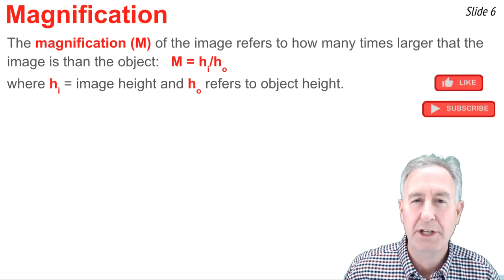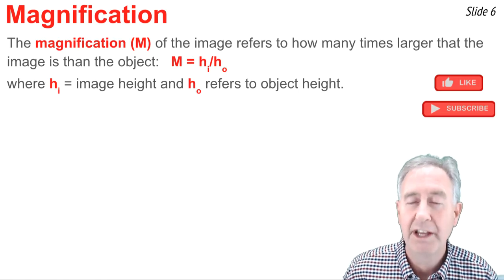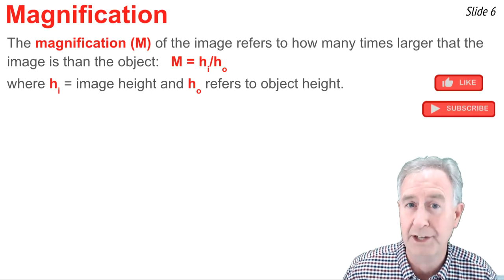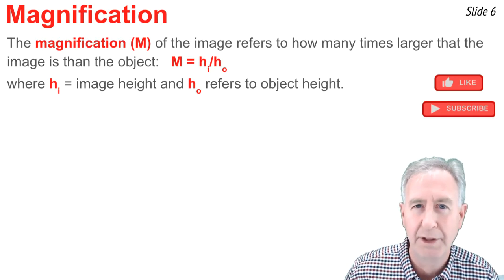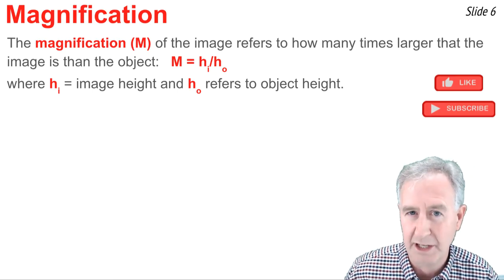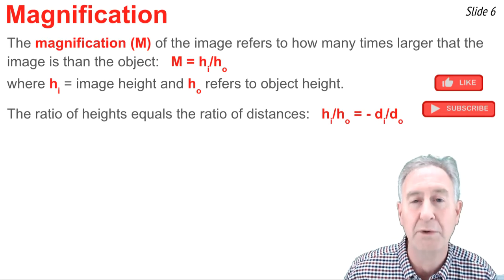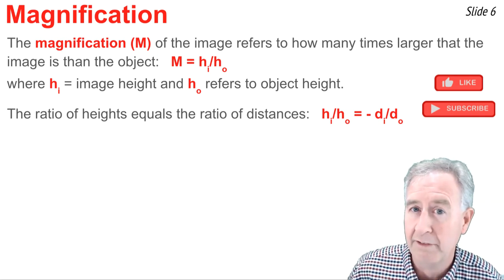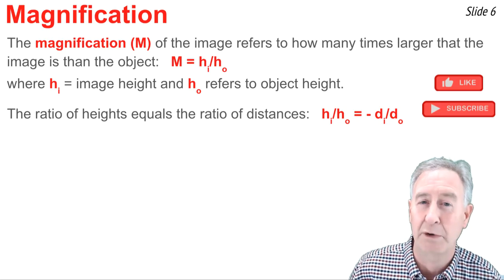The magnification of an image tells us how many times larger the image is than the object itself. If the image ends up being two times larger than the object, then the magnification is either plus or minus two. m, magnification, equal h_i divided by h_o. The h_i here is the image height, and the h_o is the object height. Now, it ends up that the ratio of these heights, h_i over h_o, is equal to the negative of the ratio of the distances. So we have the equation, h_i over h_o, equal negative d_i over d_o. Sounds like I'm rapping here for a number of reasons, but we'll just have to get over it.